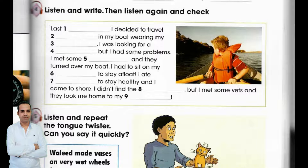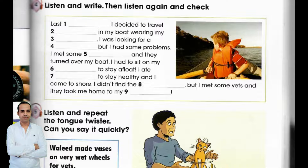Page 55, Exercise 4. Listen and write. Then listen again and check. Last Wednesday, I decided to travel west in my boat wearing my vest. I was looking for a volcano, but I had some problems. I met some whales, and they turned over my boat. I had to sit on my violin to stay afloat. I ate watermelon to stay healthy, and I came to shore. I didn't find the volcano, but I met some vets, and they took me home to my village.